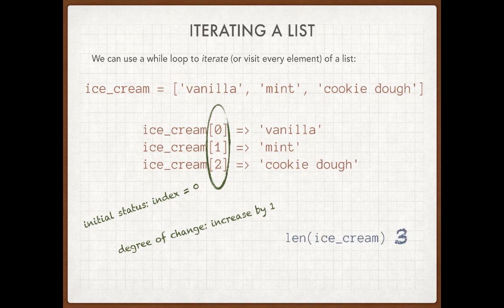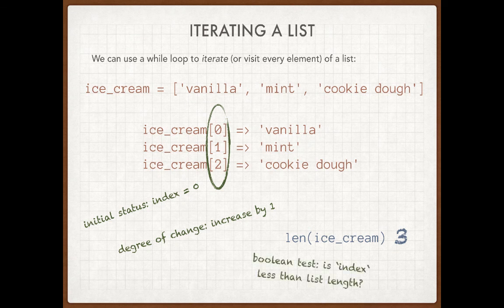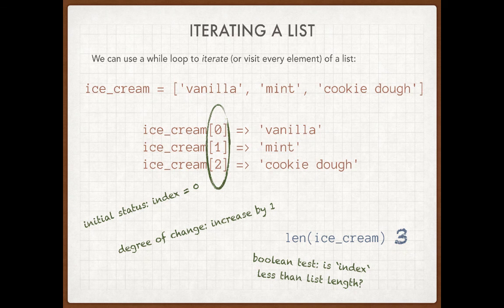How do I know when I'm going to finish? If I ask Python what is the length of ice cream, it would tell me there are three elements in that list — that's a big clue for my Boolean test. The highest index in a three-element list is two, so index will always be less than the total length of the list. That's my Boolean test: continue as long as the value in the bucket called index is less than the total length of my list. When index equals the length of the list, that's a failing condition and my loop should exit.